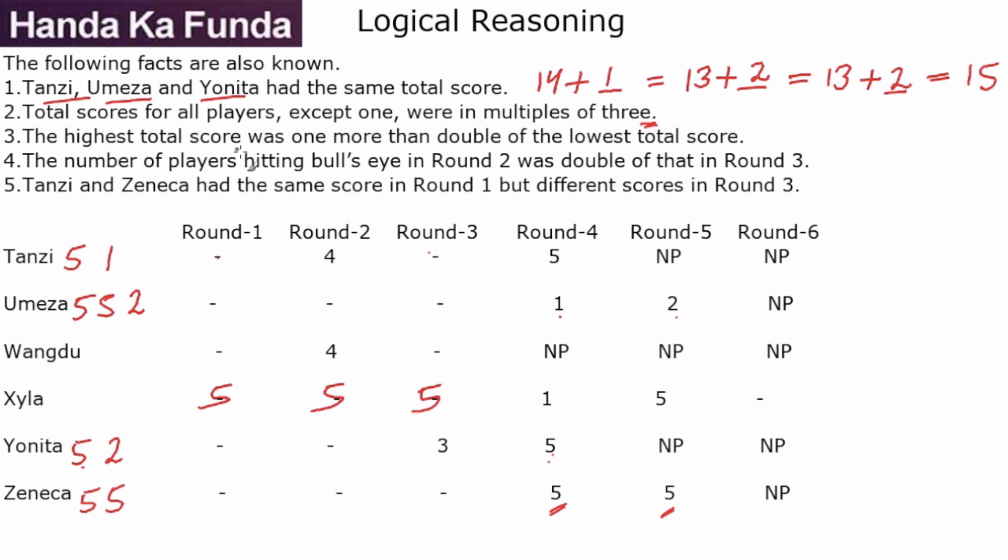Then we are given the highest total score was one more than the double of the lowest total score. So who is at the lowest? So we know Tanzi is at 15, we know Umeza is at 15, we know Yonita is at 15. Zeneca for four rounds has scored 5, 5, 5, 5. So it is 20 plus something. And Xyla has in five rounds, Xyla already has 21 plus one more score is there. So clearly, the minimum person that we are talking about is Wangdu, and whatever is Wangdu's score, double of that plus one should be the highest scorer.